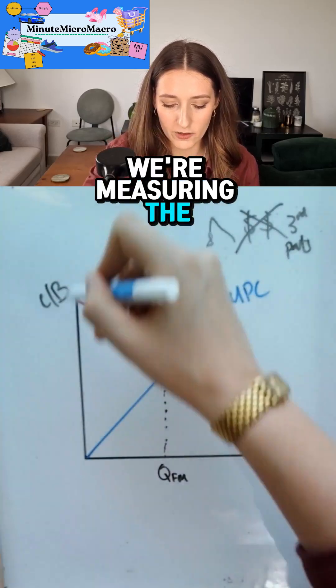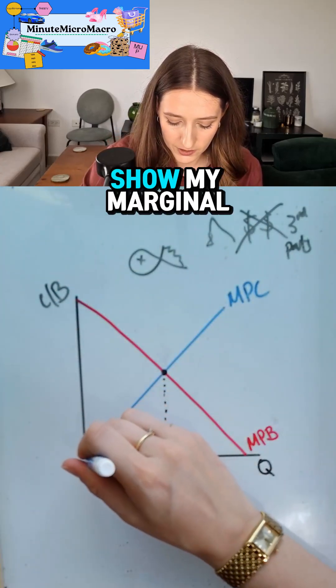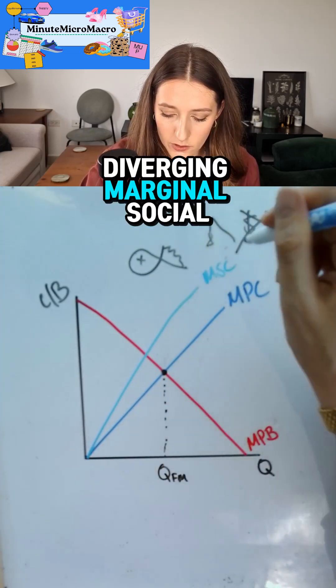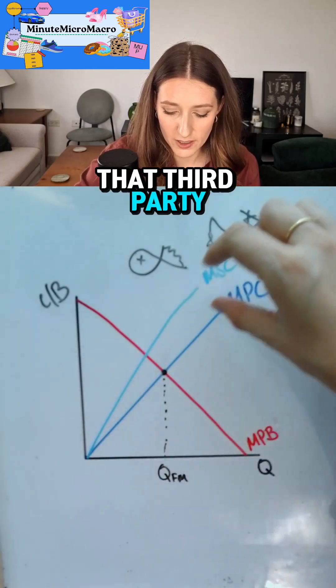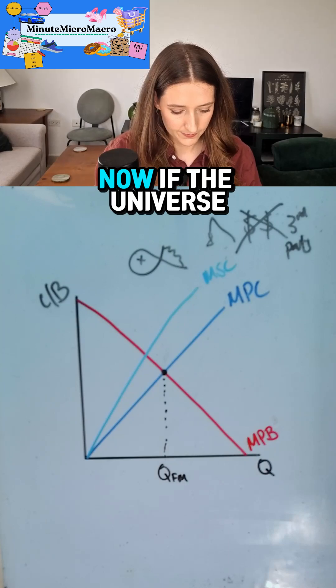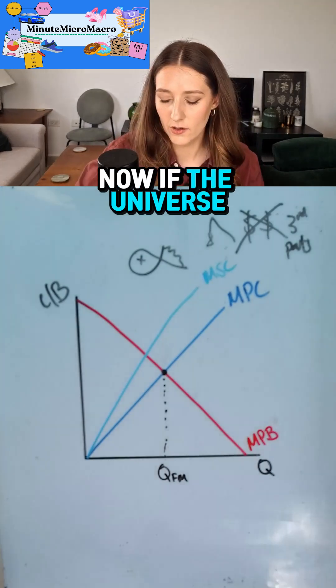So in this case, the social cost is greater than the private cost. We measure cost on this y-axis. I'm going to show my marginal social cost diverging—marginal social cost as the externality, that cost of that third party, is increasing as the quantity increases.